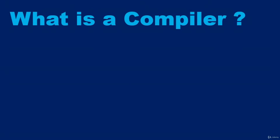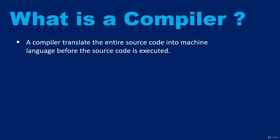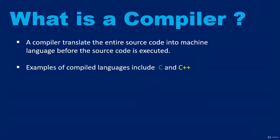In this video, I'm going to introduce you to compilers and interpreters. What is a compiler? A compiler is used to translate the entire source code into machine language before the code is executed. For the computer to understand what you're trying to get it to do, you have to use a compiler to compile or translate your code into a code the machine can read. Examples of languages that are compiled include C and C++.